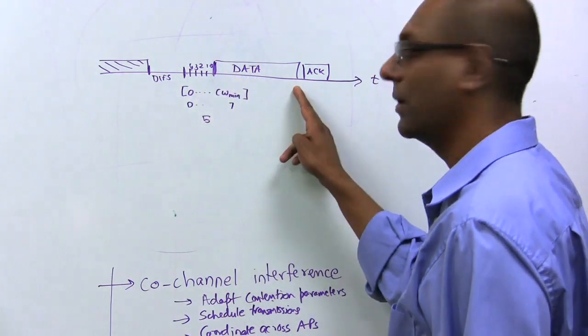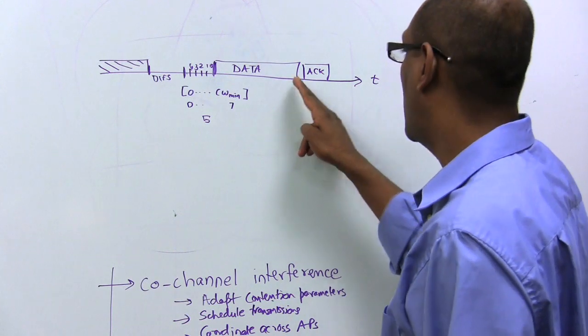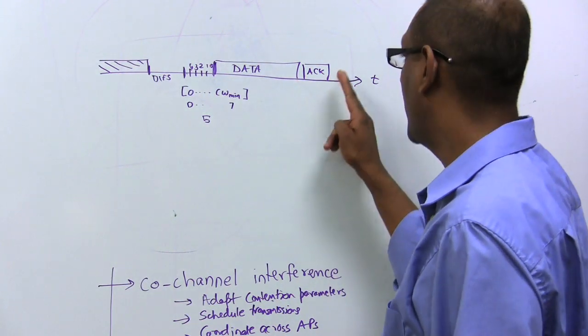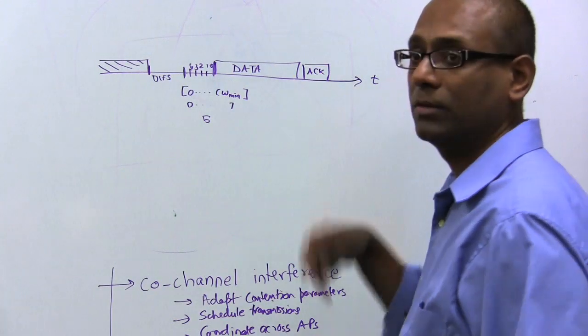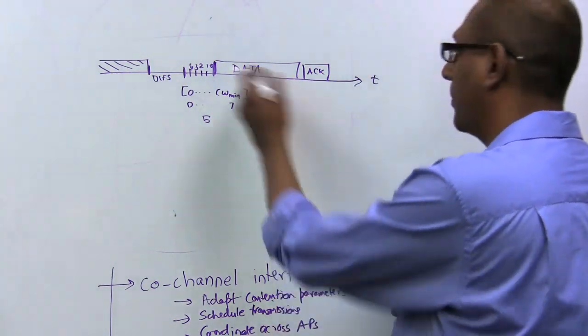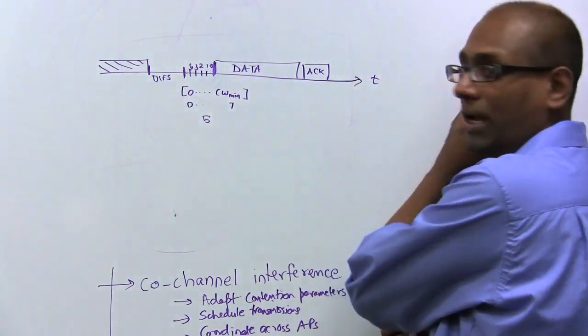And at the end of that, if it turns out that the channel is free, transmitter starts to transmit. After the transmission waits for an ACK, if the ACK doesn't come through, it declares a loss. If it does come through, says that particular transmission opportunity was fine and moves on.